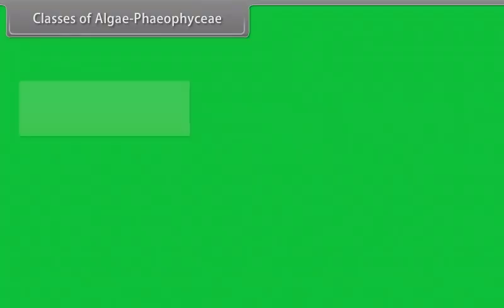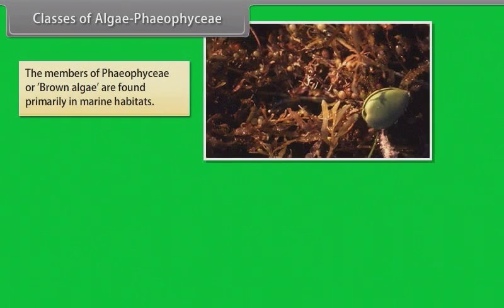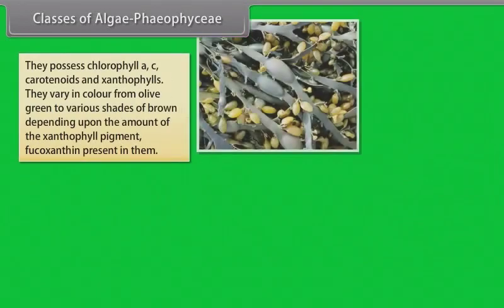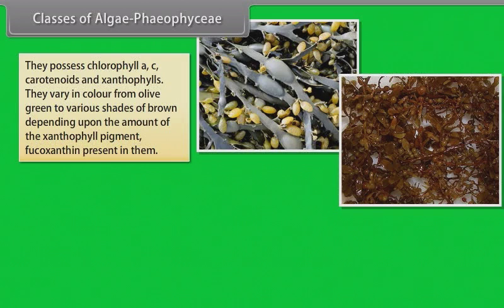The members of phaeophyceae or brown algae are found primarily in marine habitats. They show great variation in size and form. They range from simple branched filamentous forms, example ectocarpus, to profusely branched forms, example kelps, which may reach a height of 100 meters. They possess chlorophyll a, c, carotenoids and xanthophylls. They vary in color from olive green to various shades of brown depending upon the amount of xanthophyll pigment fucoxanthin present in them.